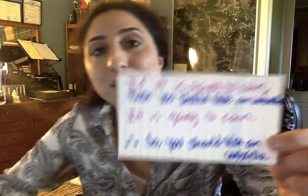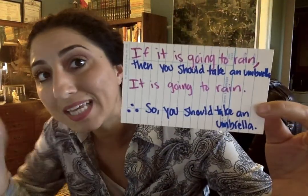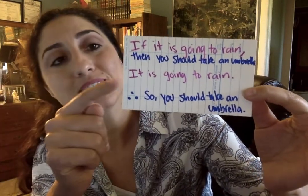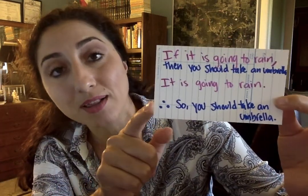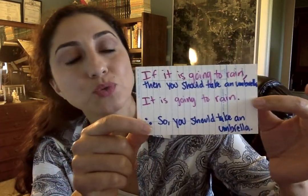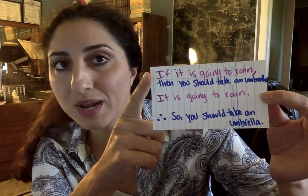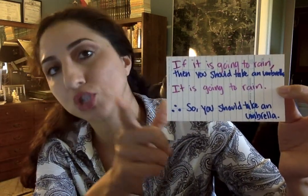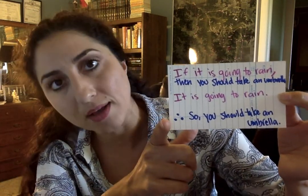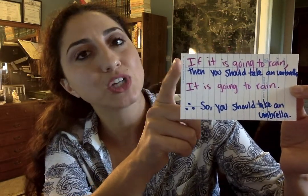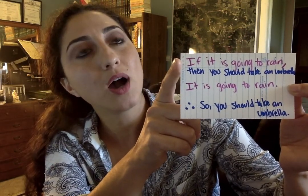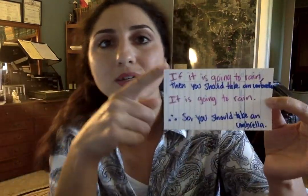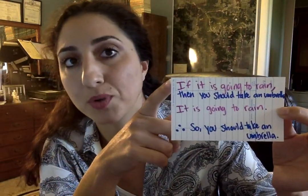To fill this in, we need the first premise. She just said it's going to rain, so take an umbrella. What she was really thinking was: if it rains, you should take an umbrella. It's going to rain, so you should take an umbrella. Her implicit assumption — her hidden premise — was that you should take an umbrella if it's going to rain.